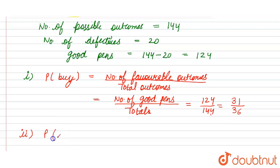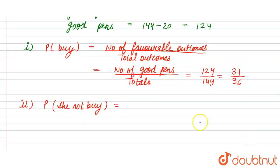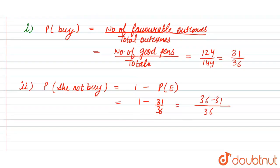Now probability that she will not buy it will be equal to 1 minus probability of getting the event. So this is equal to 1 minus 31 by 36. LCM is 36, so 36 minus 31 is 5 by 36. So this is the required answer.